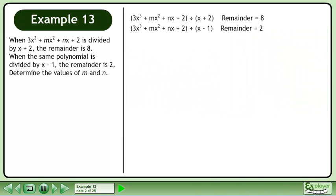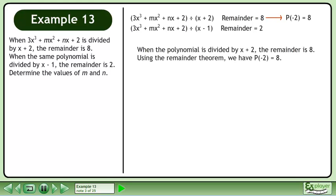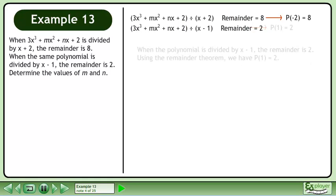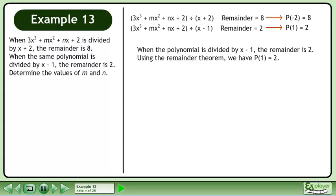Let's rewrite the information from the question. When the polynomial is divided by x plus 2, the remainder is 8. Using the remainder theorem, we have p at negative 2 equals 8. When the polynomial is divided by x minus 1, the remainder is 2. Using the remainder theorem, we have p at 1 equals 2.